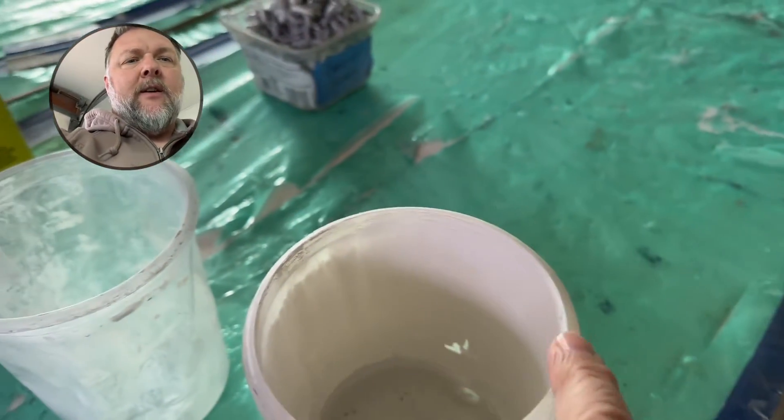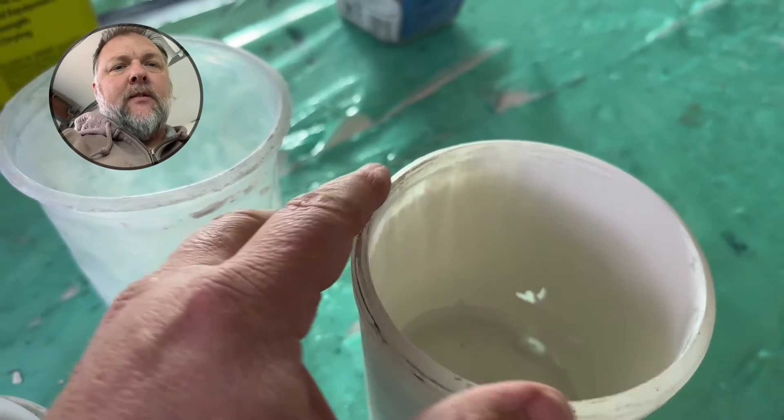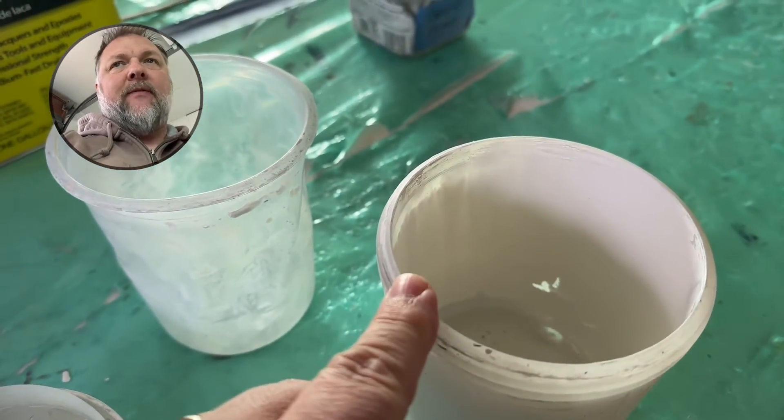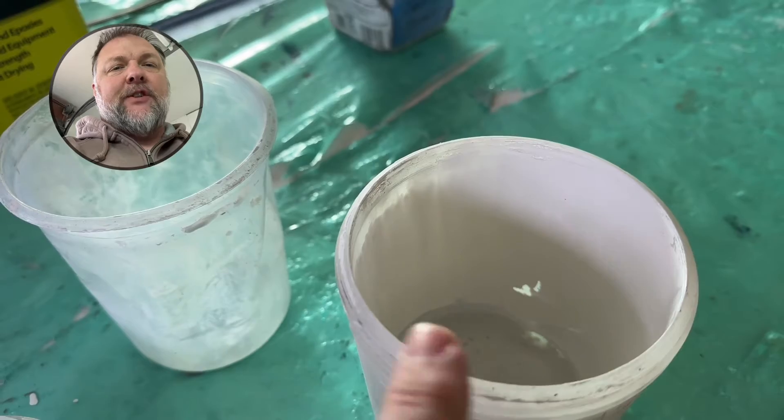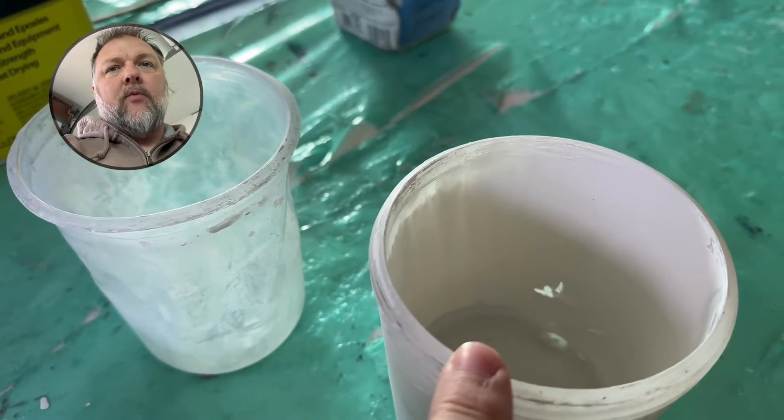Every time you're done painting, you want to take this apart. You want to wash this really good with a plastic brush, preferably if you have a brass one, use a brass one, don't use the metal one because it'll scratch it. And the more scratching you do, the more it'll ruin the seal.